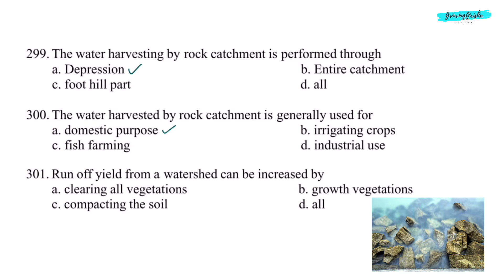Next question: water harvesting by rock catchment is generally used for — option A, domestic purpose. Next question: runoff yield from a watershed can be increased by — option A, clearing all vegetation.